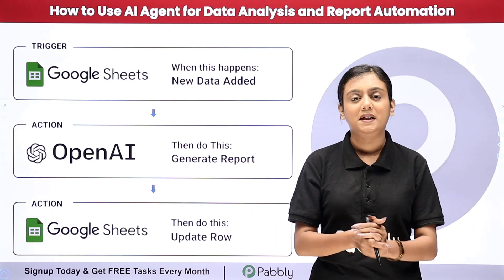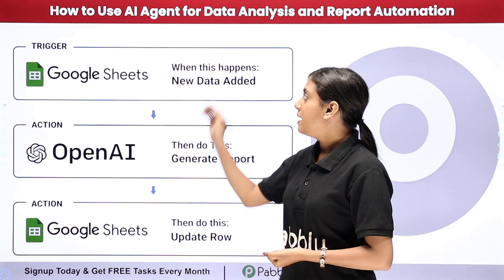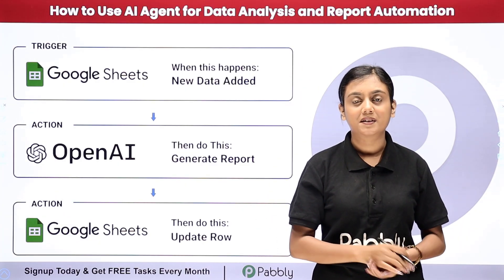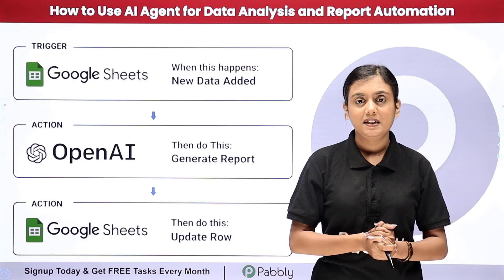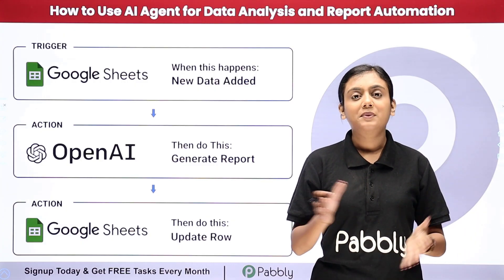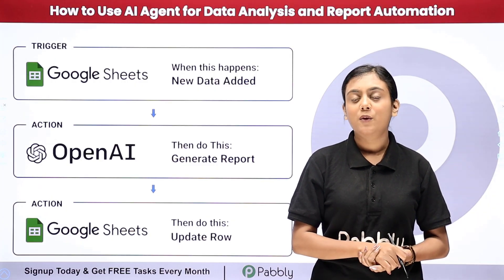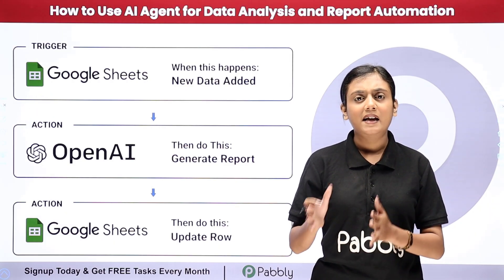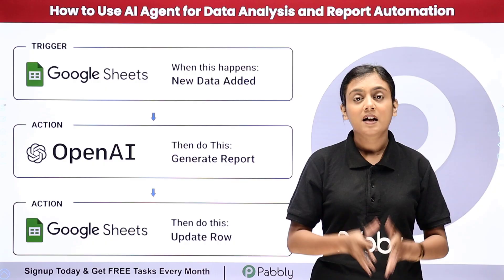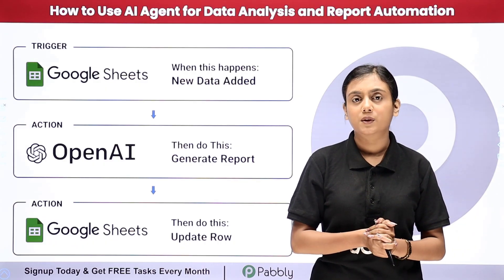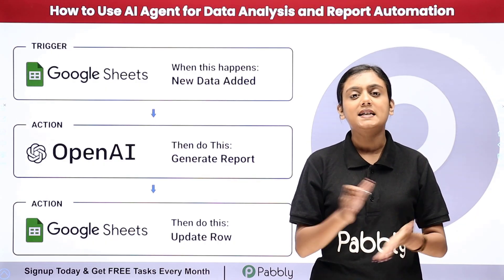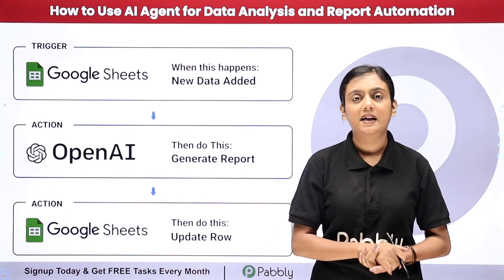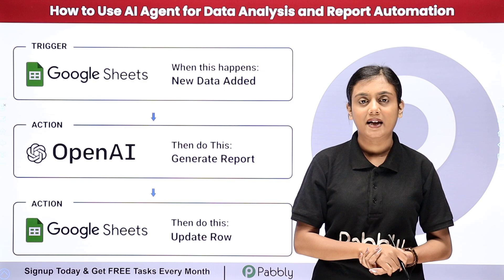Hello everyone, welcome back to Pabbly. In this video we are going to learn how to use an AI agent for data analysis and report automation. I am an owner of a retail store business and I create the record of the weekly performance of all my products in my Google Sheets. Creating the analysis of each product compared to the average performance manually is very time consuming and hectic. To solve this problem, I have created an AI agent using Pabbly Connect.